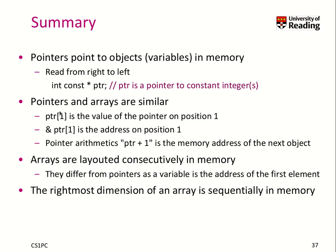There is a lot of similarity between pointers and arrays in terms of pointer arithmetic. So PTR at index 1 is the value of the pointer on position 1. The address-of operator gives us the address on position 1, wherever PTR is. Pointer arithmetic works, so when I take PTR plus 1, I take the memory address of the next object in memory.